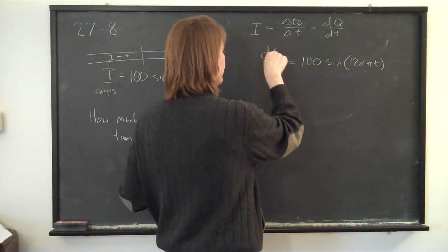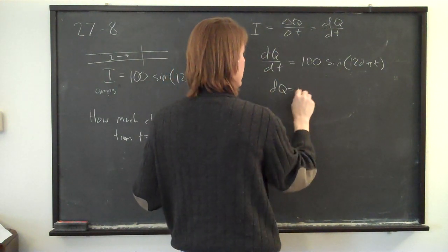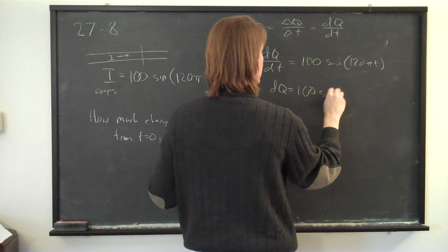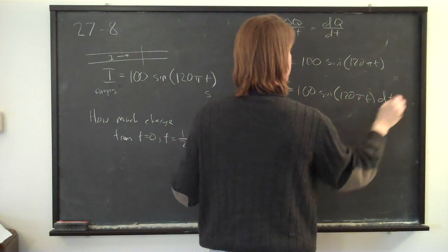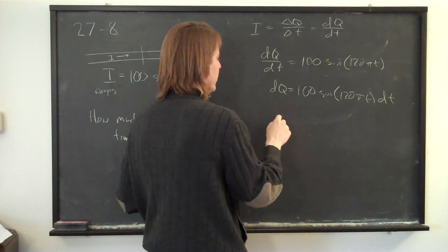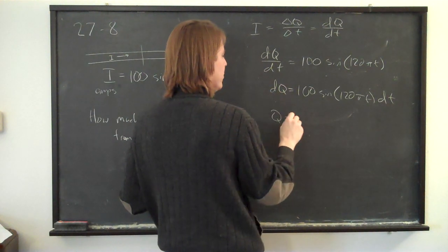We take the dt over here, and that will tell us how much charge, dQ, we're going to get: one hundred sine one twenty pi t dt. To solve it, you just take an integral. The total charge, Q, would be if we took the integral of that.